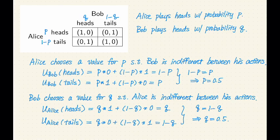Let's take a look at how we can derive the mixed strategy Nash equilibrium of this matching quarters game. Each player is playing a mixed strategy, which is a probability distribution over all their actions. In this case there are two actions per player, so Alice plays heads with probability p and tails with probability 1 minus p. Bob also plays heads with probability q and tails with probability 1 minus q. I've highlighted the corresponding probabilities in the game matrix, which we'll use to calculate expected utilities.